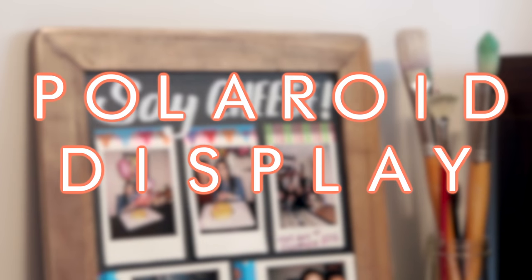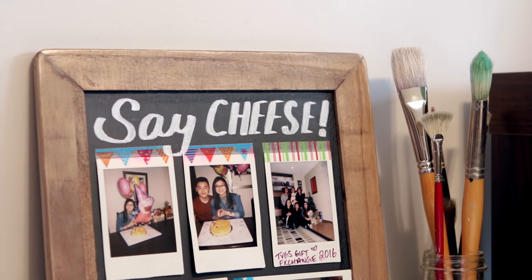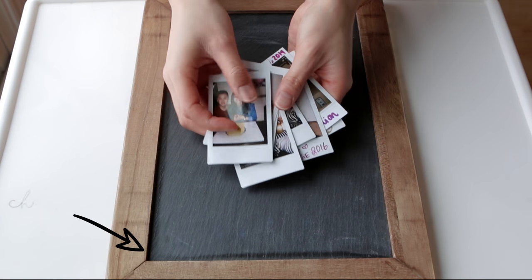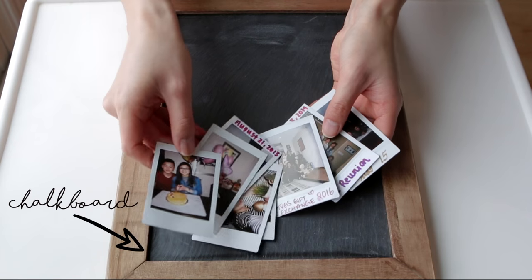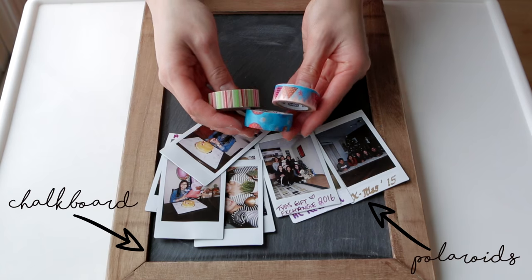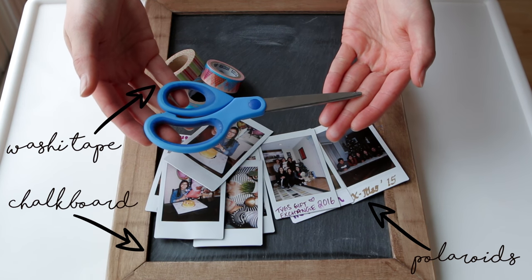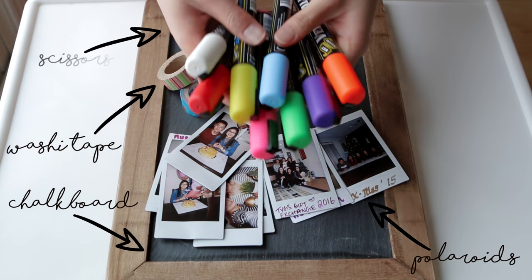So moving on to our next project. For this Polaroid display, you're going to need a mini chalkboard, or in this case, I'm using a wooden frame slateboard from VersaChalk. You're also going to need some Polaroids, of course, and some washi tape of your choice, a pair of scissors, and lastly some chalkboard markers. Or you can just use chalk.